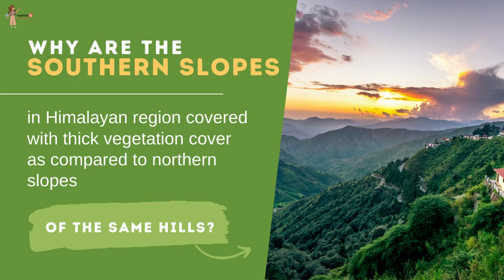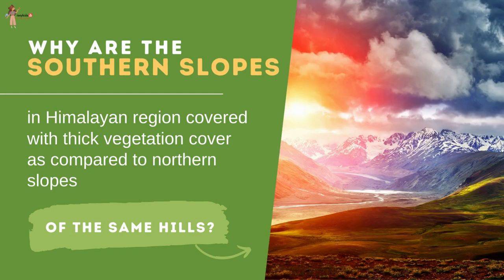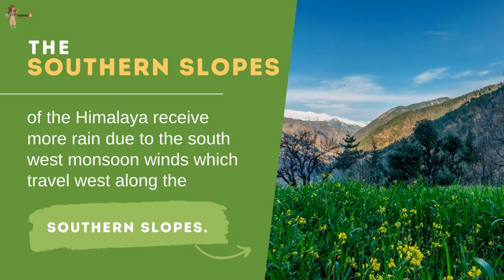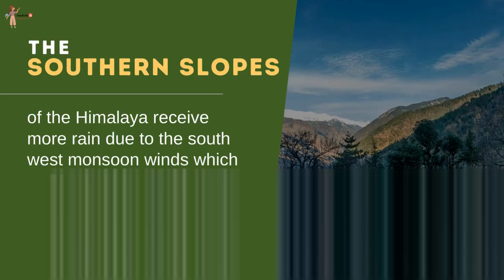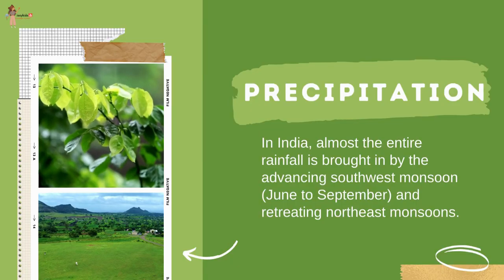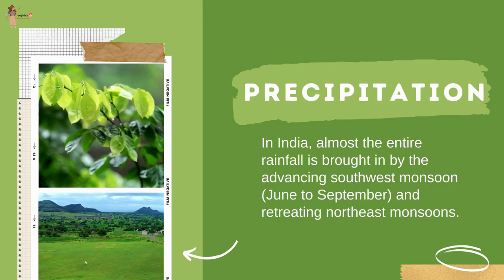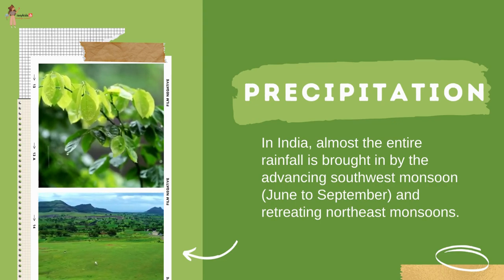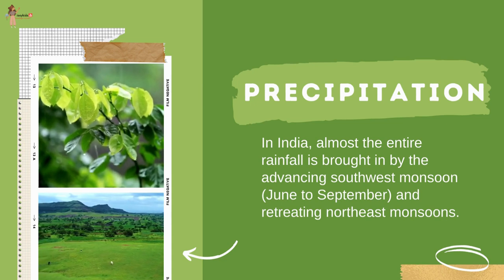Do you know why the southern slopes in the Himalayan region are covered with thick vegetation compared to the northern slopes of the same hills? This is because the southern slopes of the Himalayas receive more rain due to the southwest monsoon winds, which travel westward along the southern slopes, whereas the northern slopes do not receive any such rainfall.